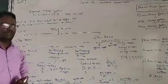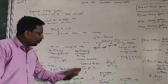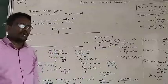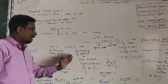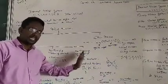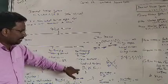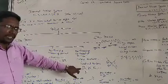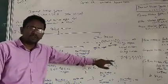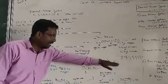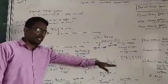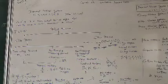Non-terminating non-repeating decimals are called irrational numbers. Even root 2, root 3, root 5 — all numbers under a square root are irrational numbers, because when we convert them to decimals they go on without repeating. However, root 4 is not irrational because root 4 equals 2, which is an integer. Similarly, root 9 equals 3, which is also an integer.